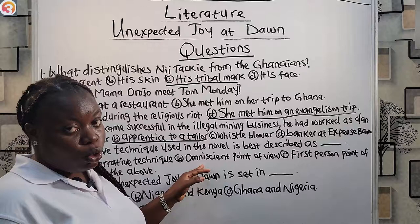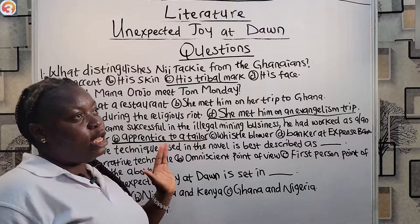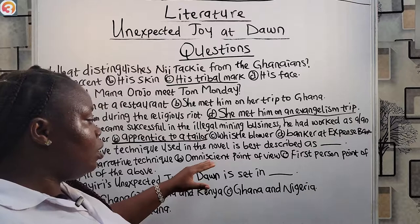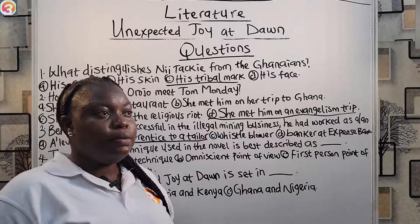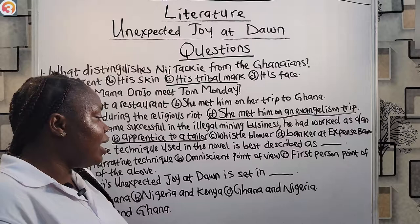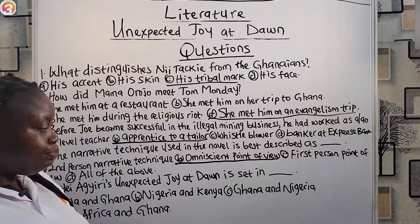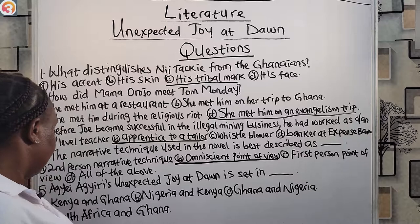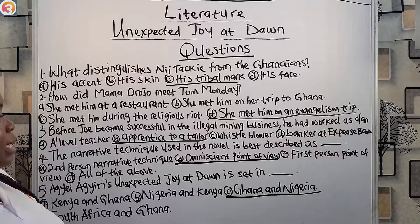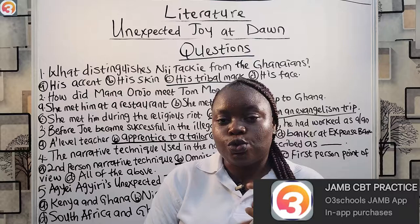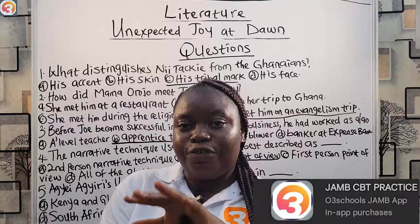The omniscient point of view is under the third person, where a narrator tells the story and is able to tell us everything about the characters and plot. The first person point of view uses pronouns like 'I' and 'me' and is associated with autobiographies. 'Agui's Unexpected Joy at Dawn' is set in Ghana and Nigeria. These questions are pulled from the Oturi Schools JAM app — there are many more questions you can use to practice for your exams. Download the app and start practicing. Thank you for watching.